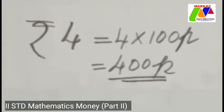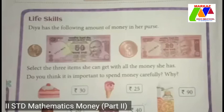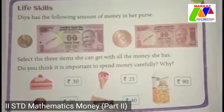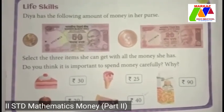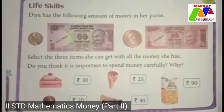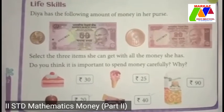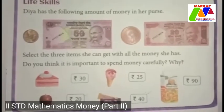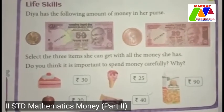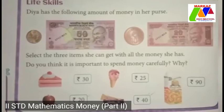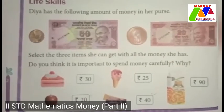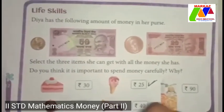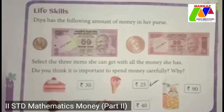Now we move to life skills. Dia has the following amount of money in her purse: a five rupee coin, a fifty rupee note, a ten rupee coin, and a twenty rupee note. Select the three items she can get with all the money she has. In total, Dia has eighty-five rupees. She can get an ice cream for twenty-five rupees, an apple for twenty-five rupees, and a basket of apples for forty rupees.